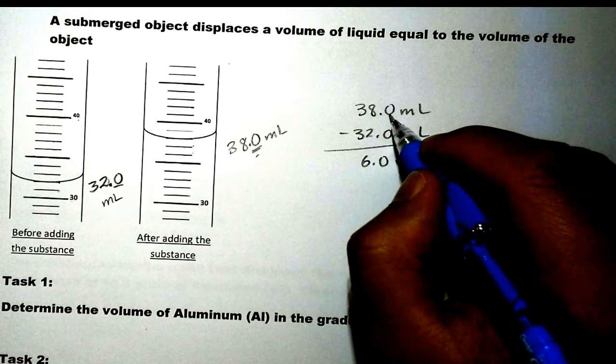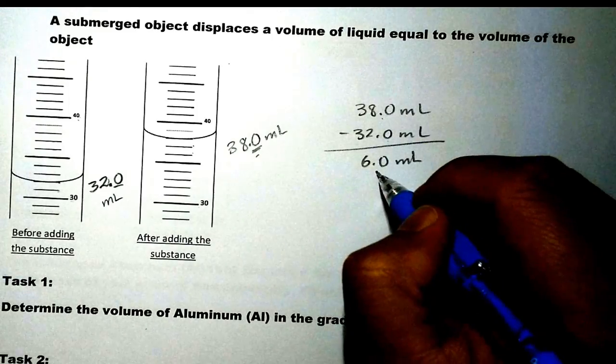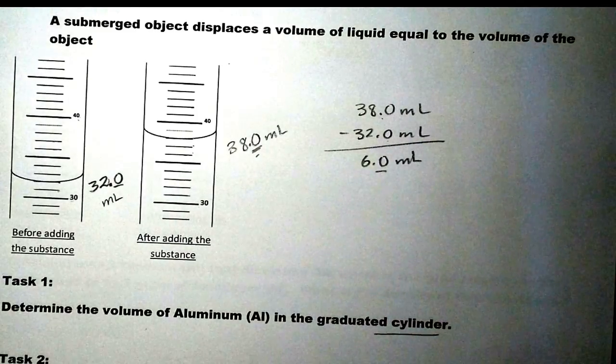And we have our difference in terms of 6.0 mL. Notice how we subtract, right? We keep the least decimal place. But both of them have one decimal place, so our answer also has one decimal place as well.